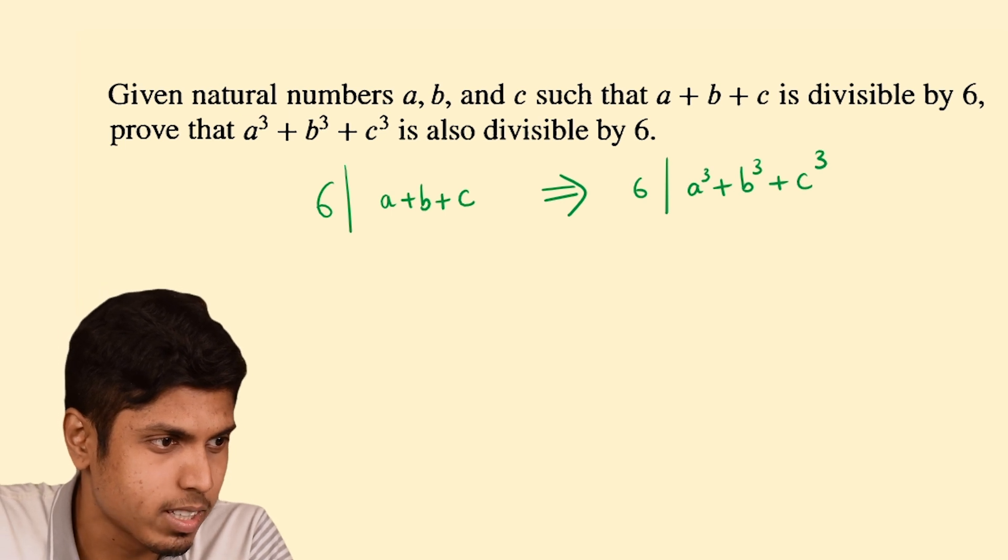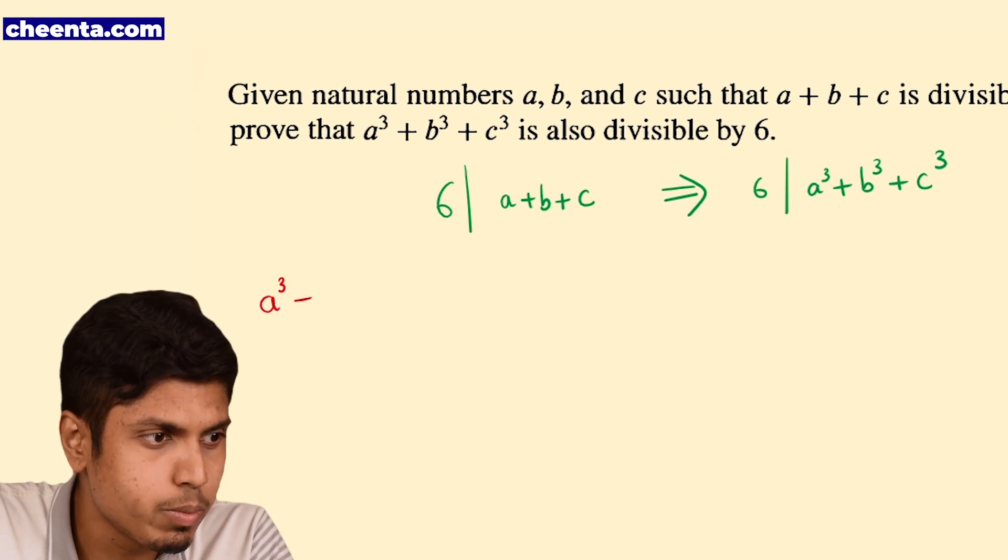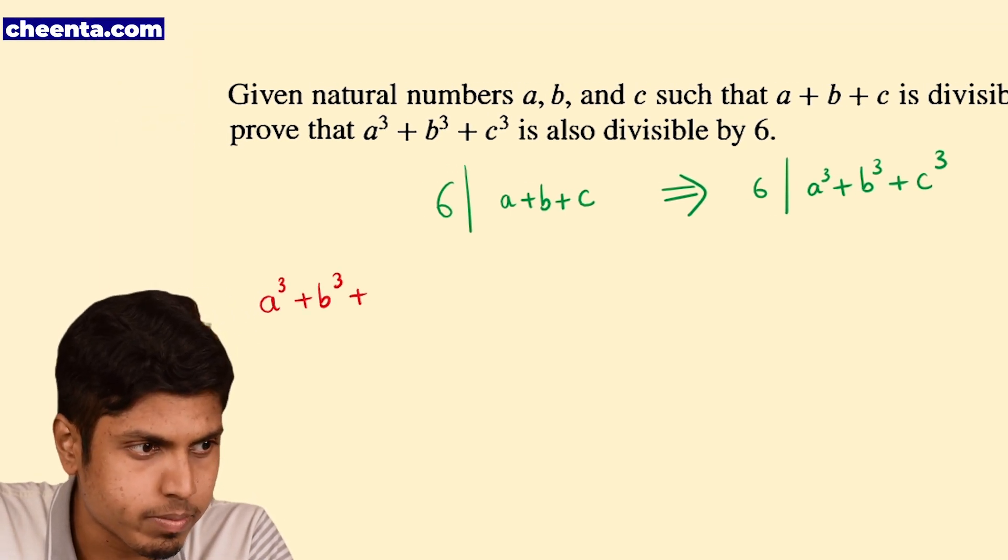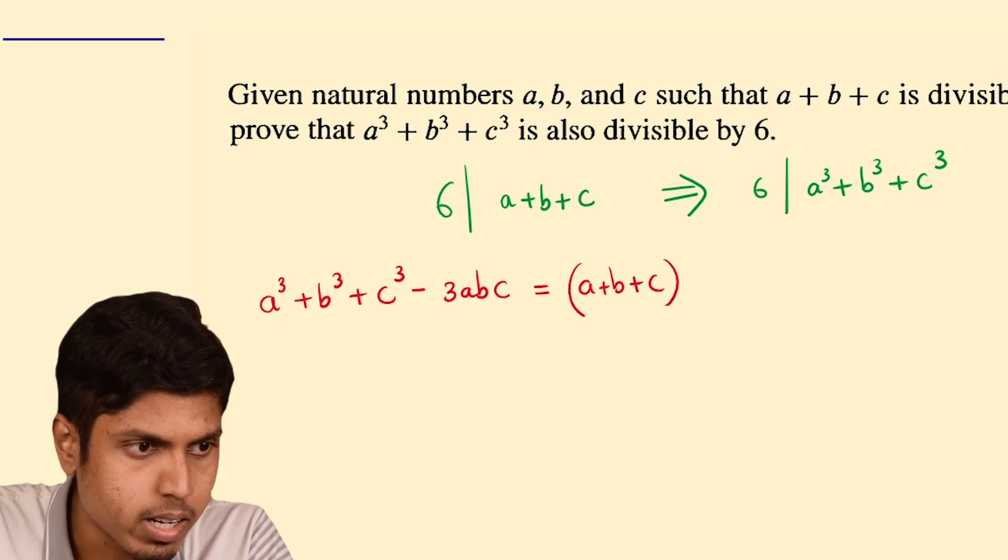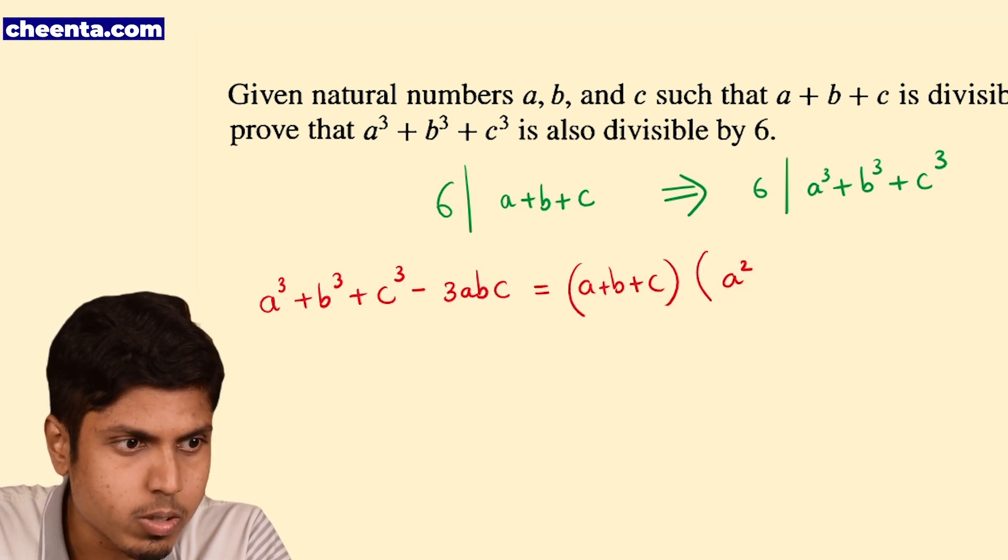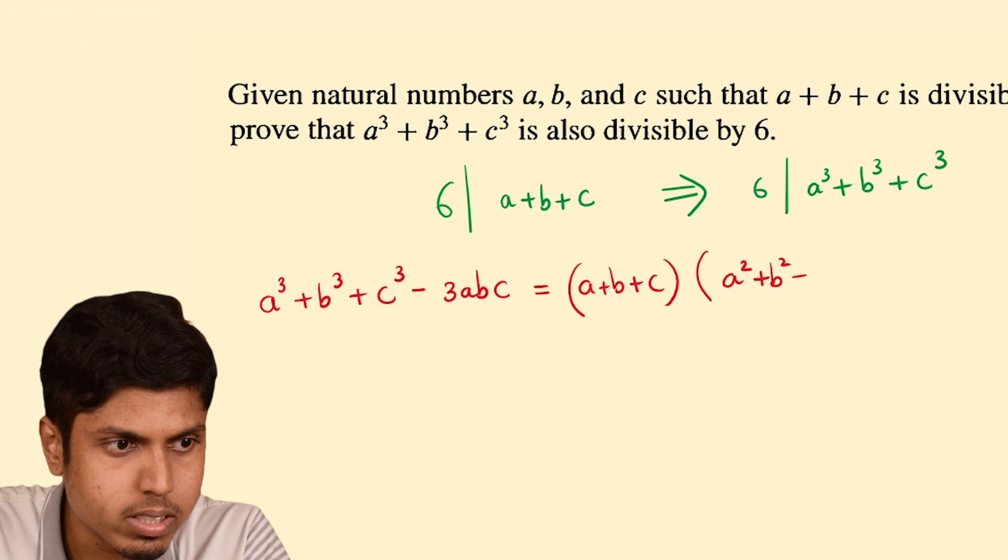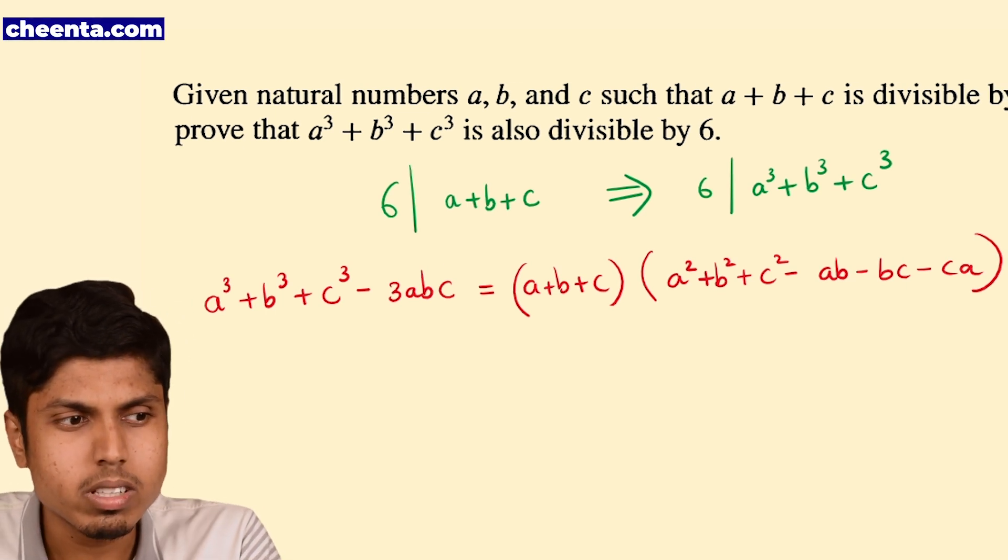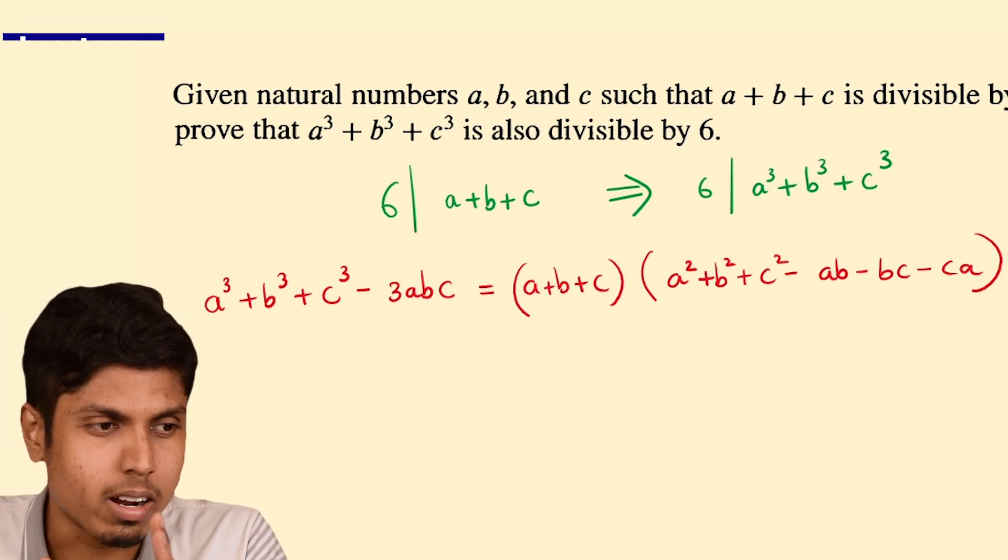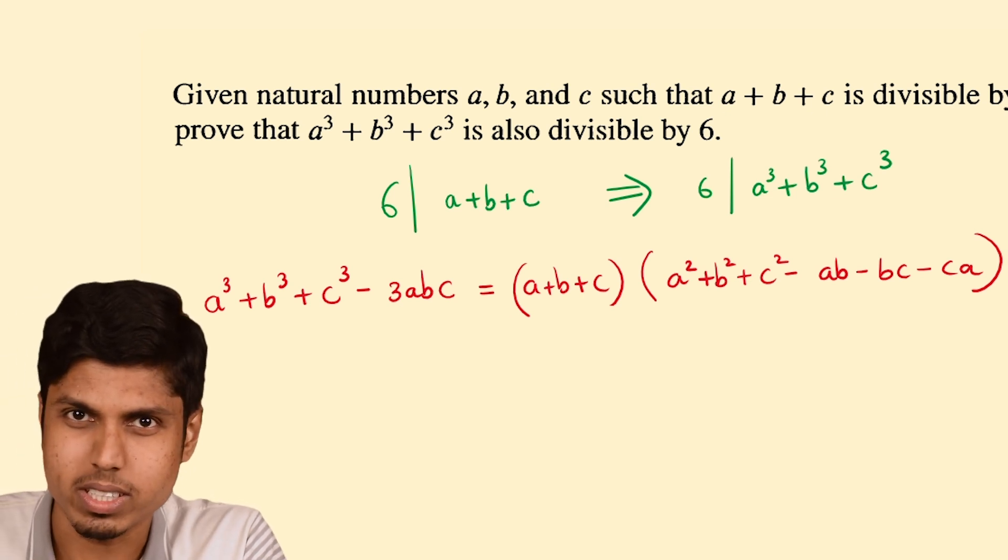It's the following. A cube plus B cube plus C cube minus 3ABC equals A plus B plus C times A square plus B square plus C square minus AB minus BC minus CA. So this could give you a great way forward to this question.